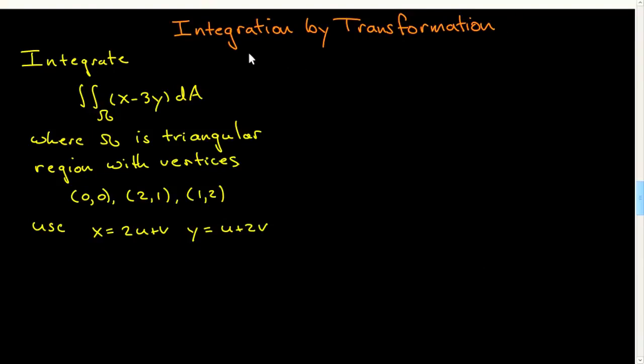In this screencast, I want to do an example of integration by transformation. This is the question I've chosen. You're asked to compute the following double integral, where omega is a triangular region with these three vertices, and you're told which transformation to use. You're given a linear transformation to use. It's the same linear transformation I considered a couple screencasts back.